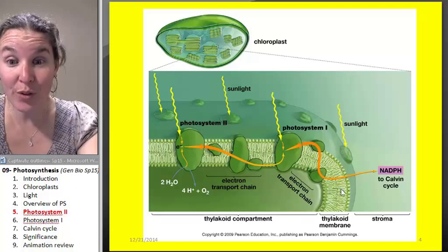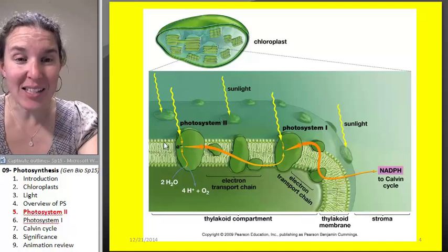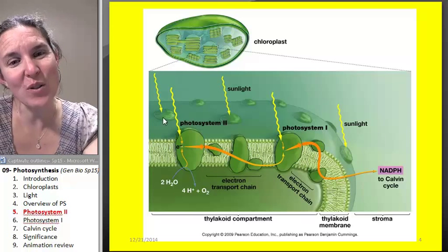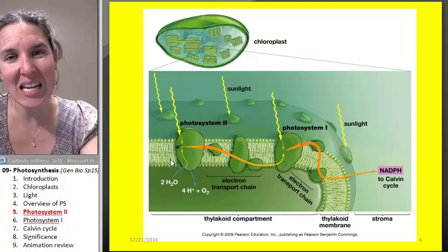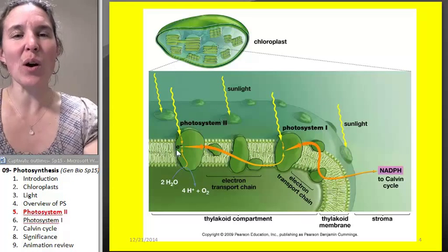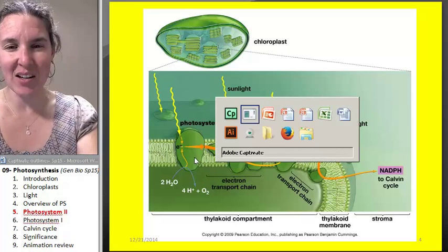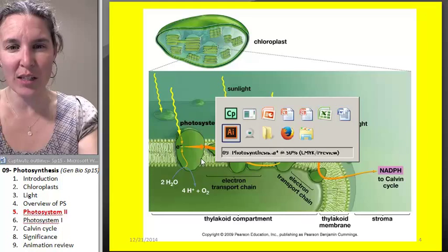This is an actual thylakoid, and you can see that it's made of cell membrane, and these are my photosystems that are embedded in the membrane. I just wanted you to have a sense of what they actually truly looked like.